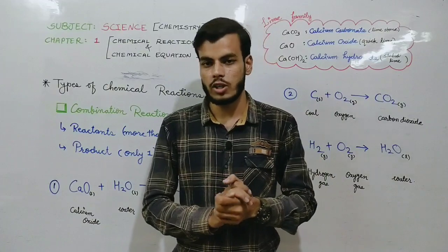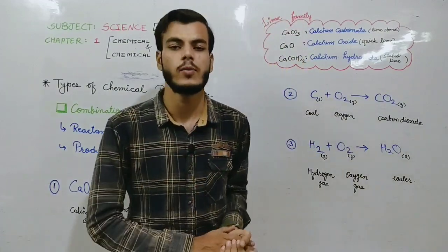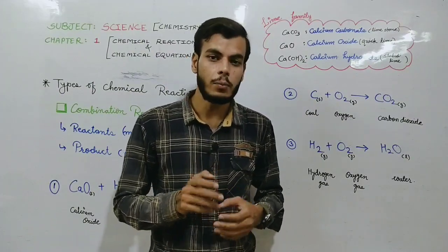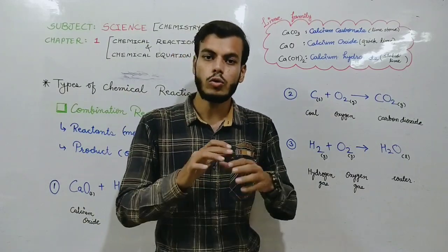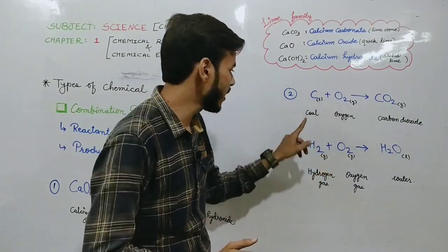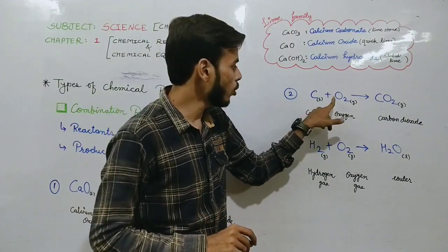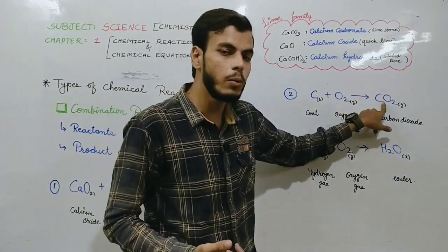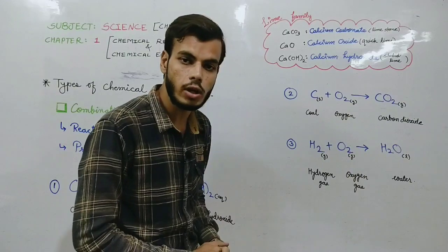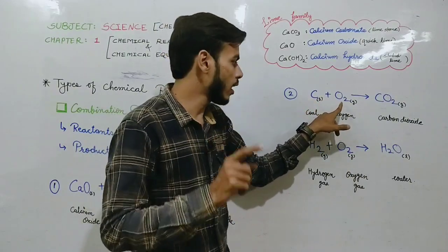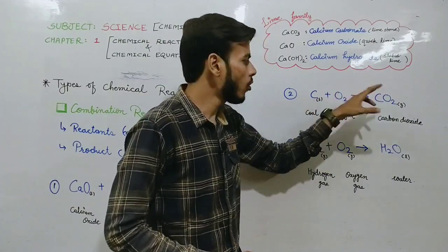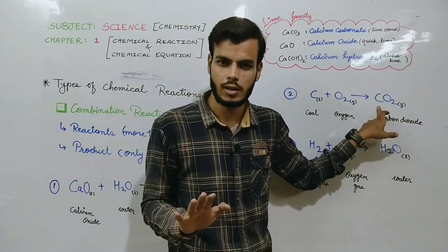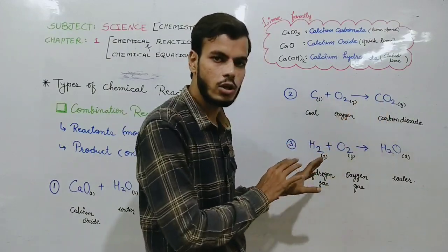Now we were on combination reaction. You have studied the first example. In routine life, when you run any vehicle, fuel is added, or when we burn coal at home — coal is the fuel, and it majorly contains carbon. This carbon reacts with oxygen. This kind of reaction is known as combustion reaction, and carbon dioxide is formed. Here how many reactants are used? Carbon from coal and oxygen from atmosphere — both combined and carbon dioxide formed. This reaction also produces heat, but heat is not a product, it is a form of energy.